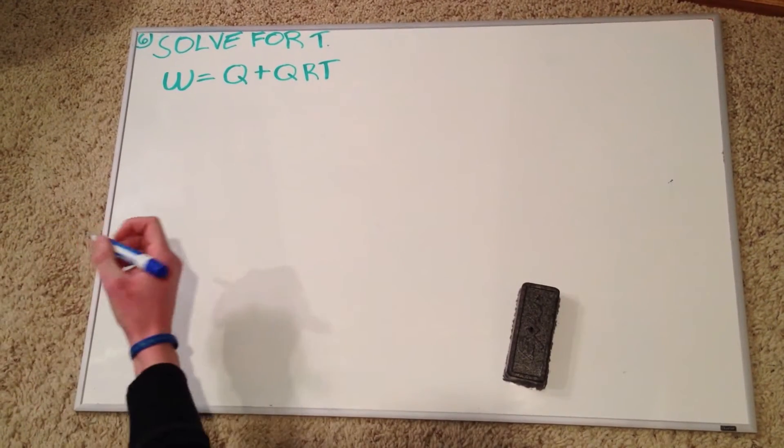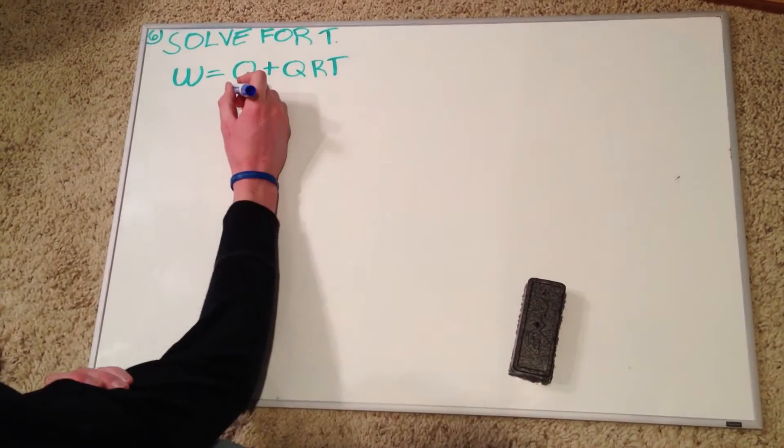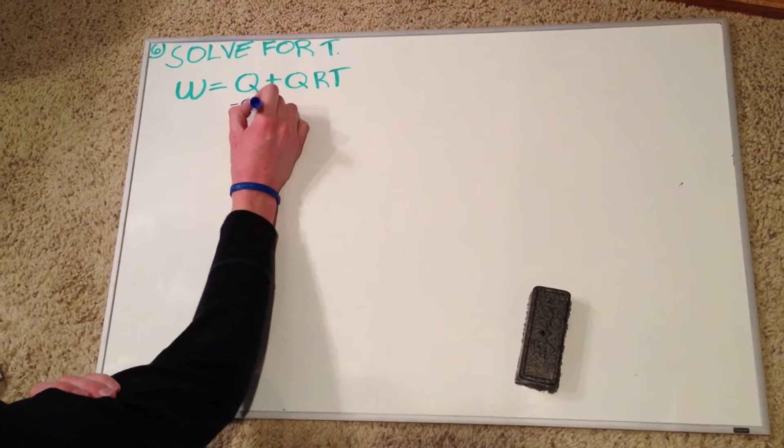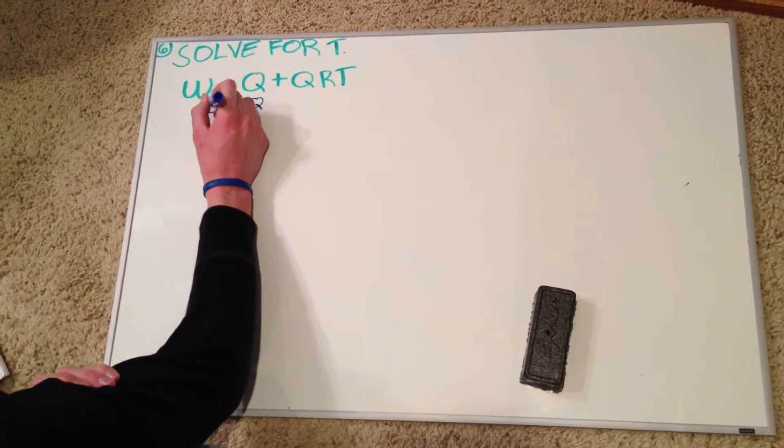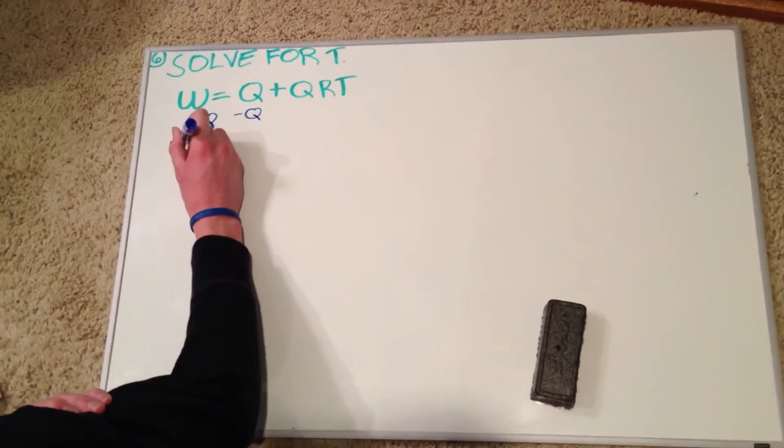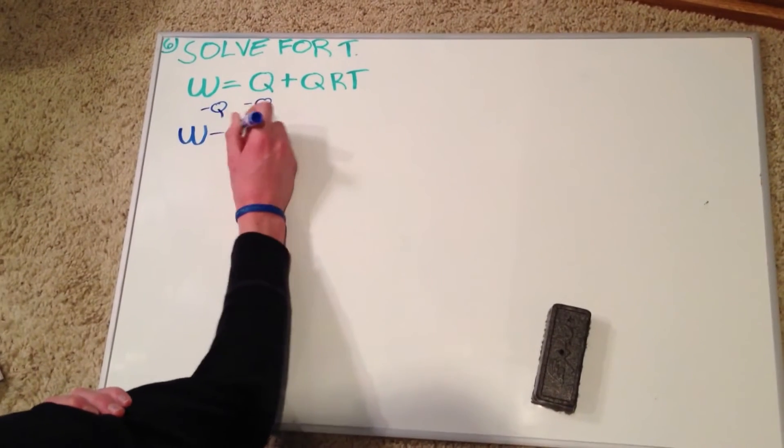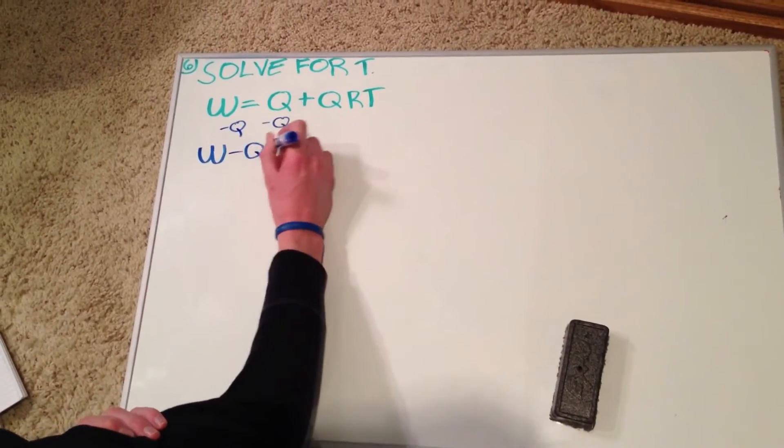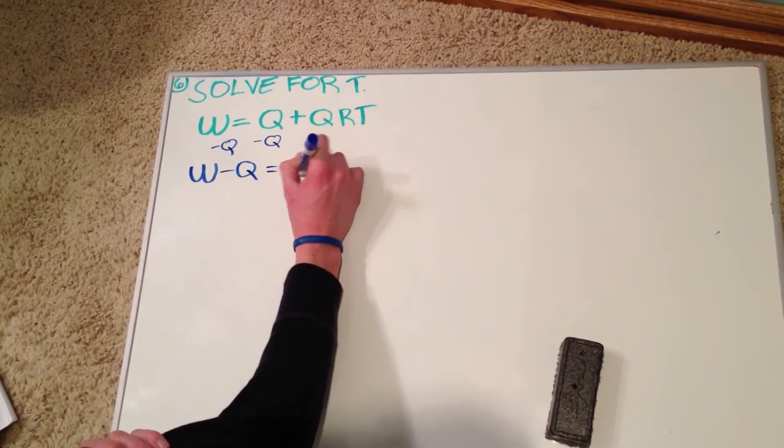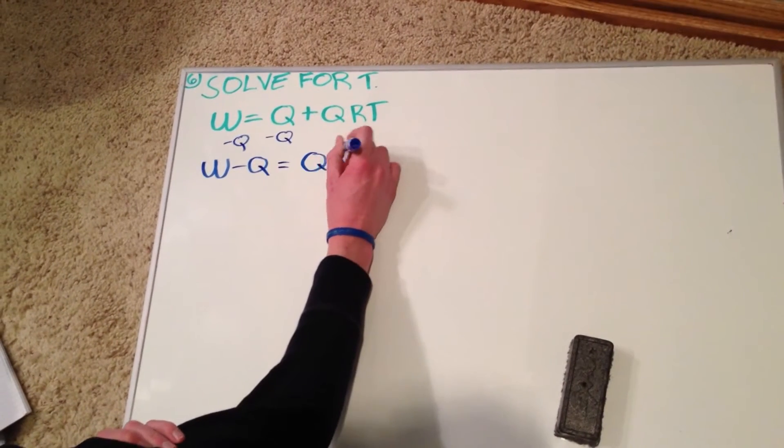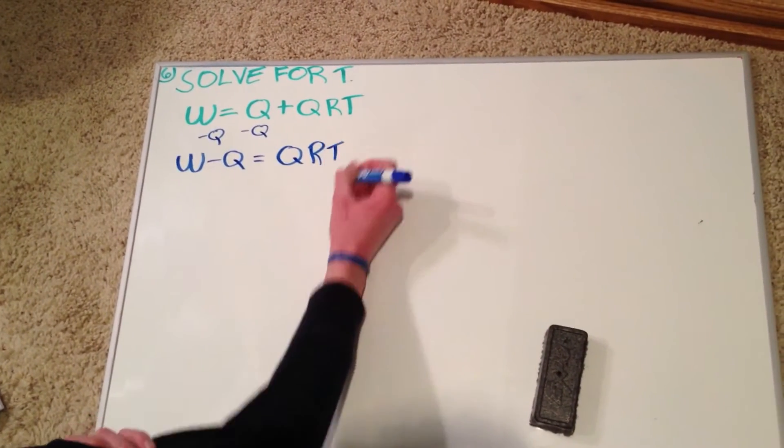So first what we're going to do, because Q is by itself, we're going to subtract this Q from both sides. What we do to one side, we do to the other. So we have W minus Q equals QRT.